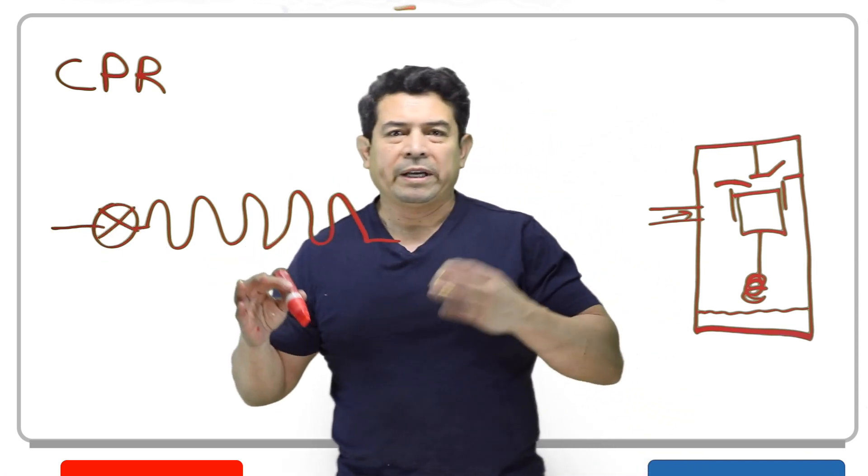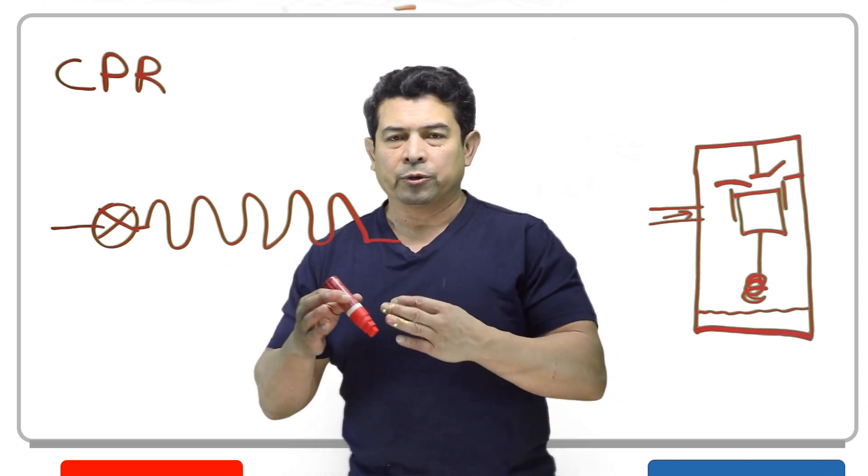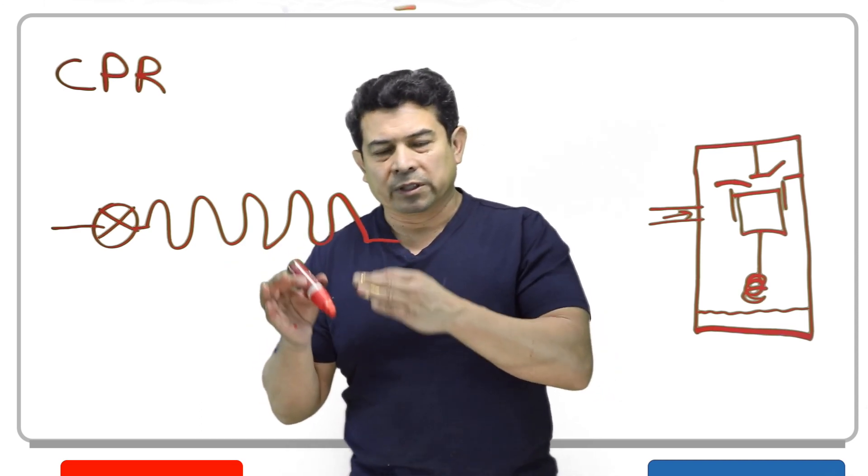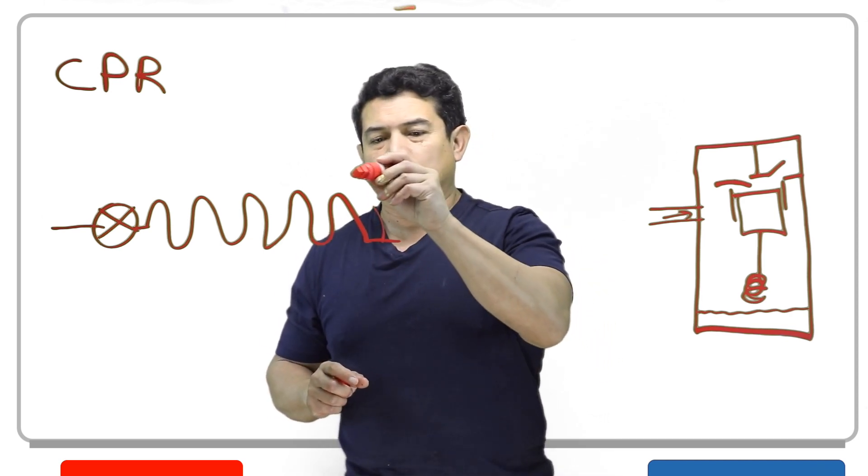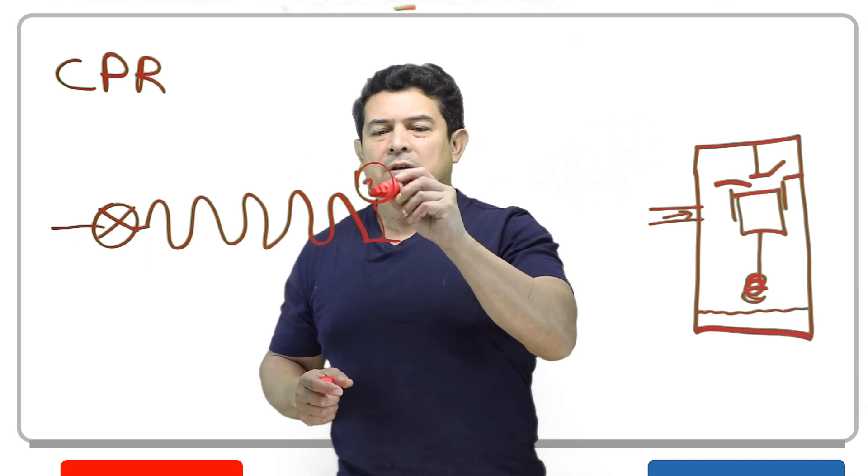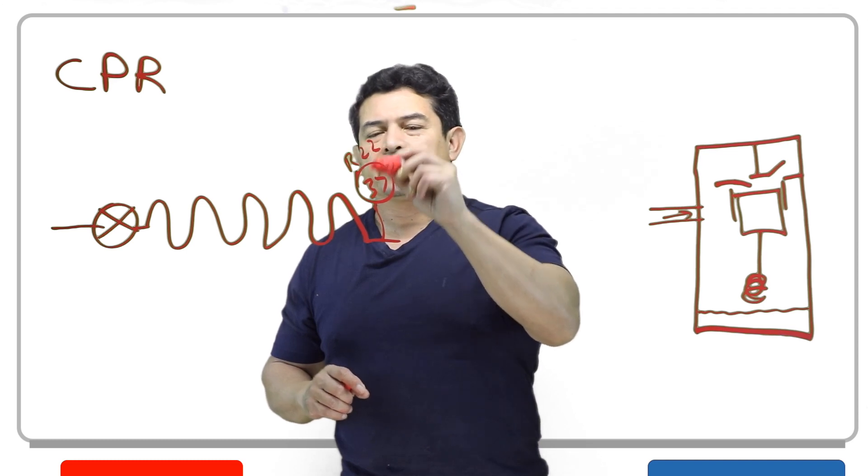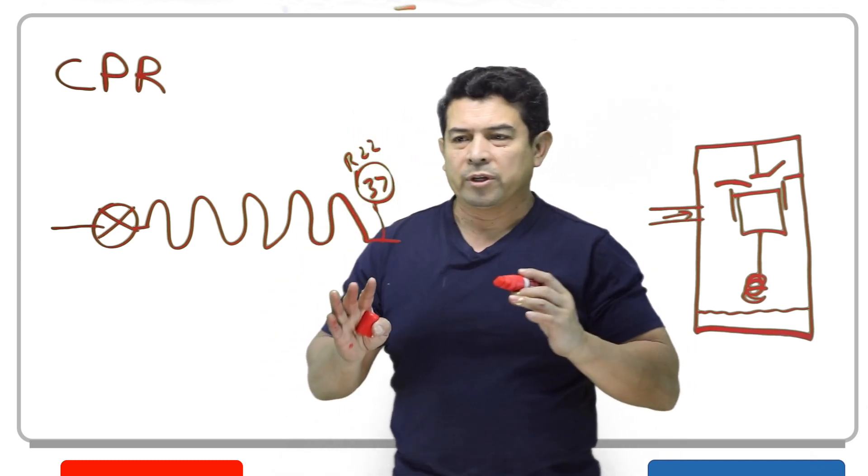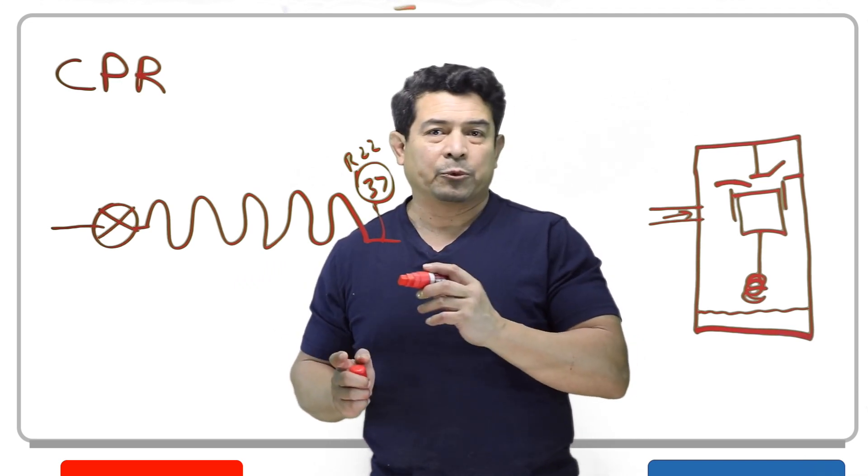This evaporator is going to be at a specific temperature. Now the temperature, we know what the temperature is going to be because of the pressure. So we can have an actual pressure gauge here. And let's say this reads 37 PSIG. Let's say that this happens to be R22. The point is that that pressure is going to tell you what the temperature of the evaporator is.